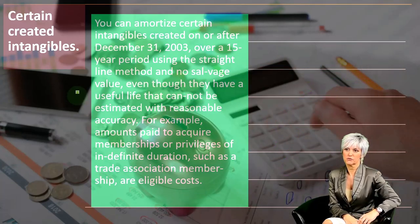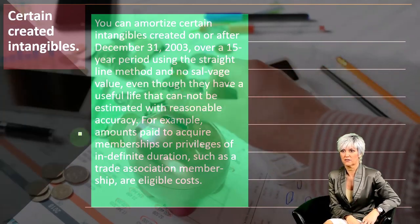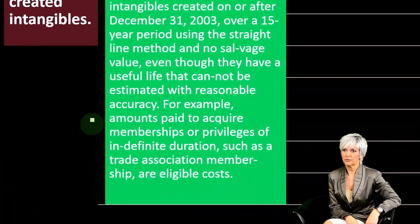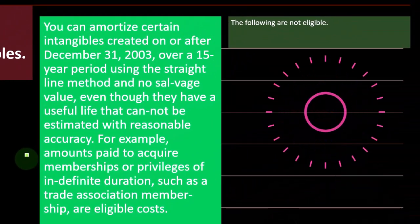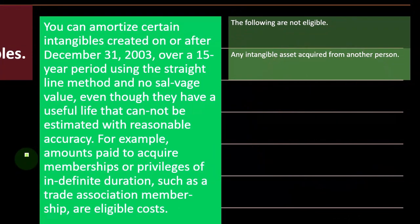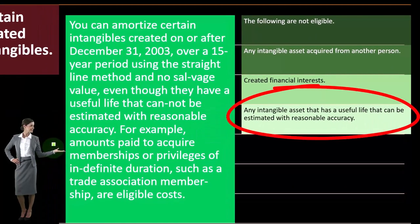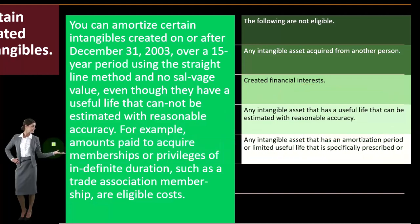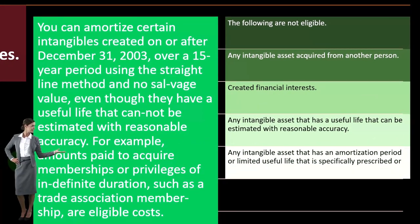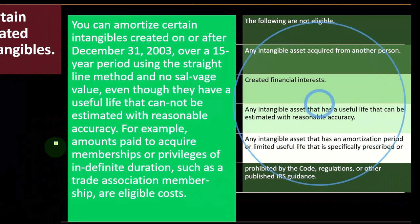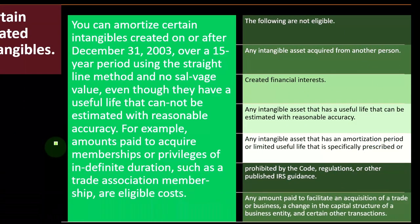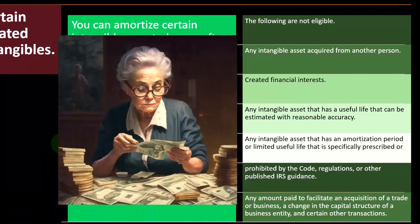For example, amounts paid to acquire membership or privileges of indefinite duration, such as trade association memberships, are eligible costs. The following are not eligible: any intangible asset acquired from another person or created financial interests; any intangible asset with a useful life that can be estimated with reasonable accuracy; any intangible asset with an amortization period or limited useful life specifically prescribed or prohibited by the code, regulations, or other IRS guidance; and any amount paid to facilitate an acquisition of a trade or business, a change in the capital structure of a business entity, or certain other transactions.